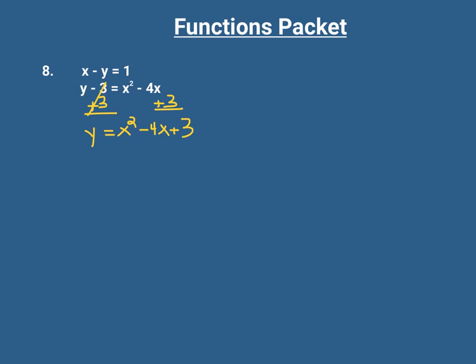I got y all by itself. The reason we did that is because if we know that y is equal to x squared minus 4x plus 3, we can substitute y in our other equation. In this first equation, we can substitute this y with what y is equal to. So we're going to take what y is equal to and substitute it.